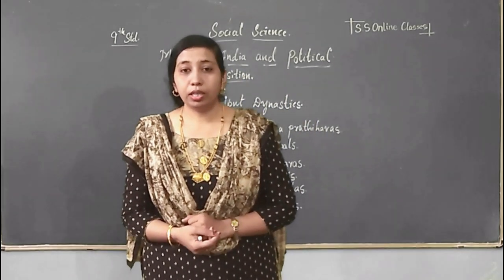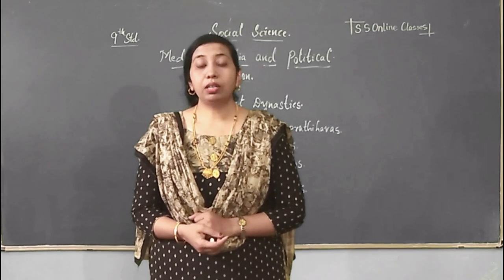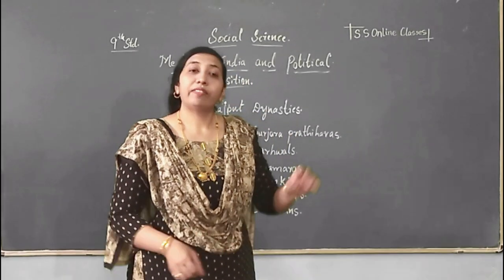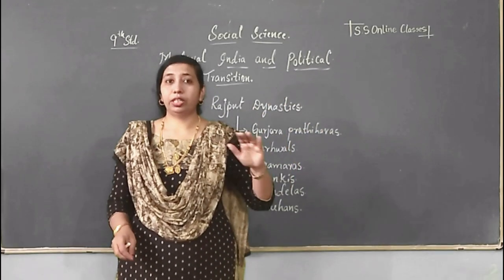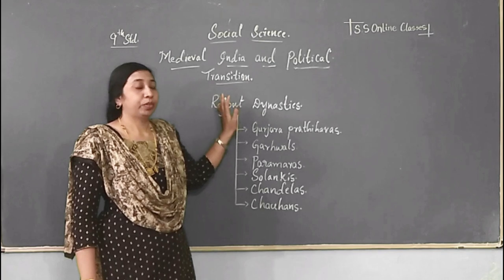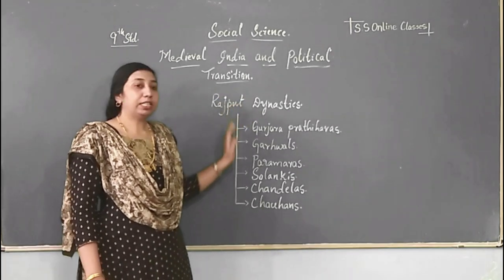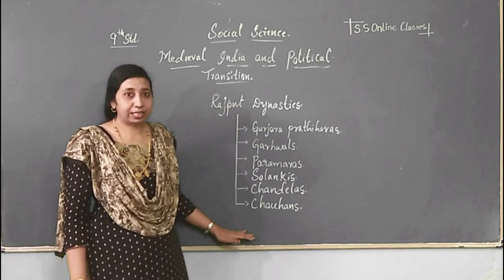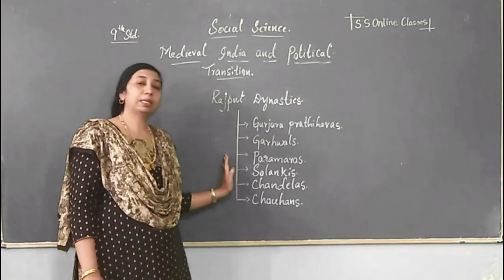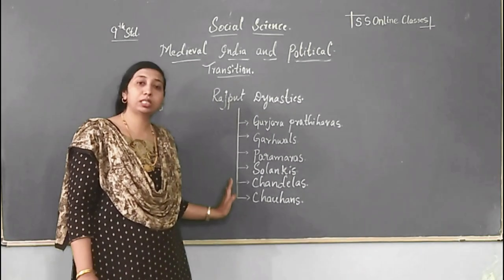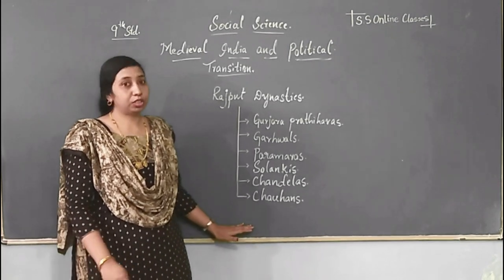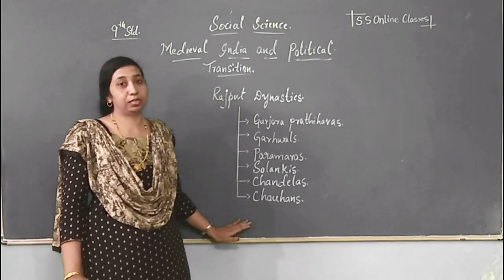In this part of the video we will learn about the kings who ruled over North India. The very first thing that comes to mind about North India is the Rajput dynasty. The Rajput dynasties were ruled by six dynasties: Gurjara Pratiharas, Gharvals, Paramars, Solankis, Chandelas, and Chauhans.